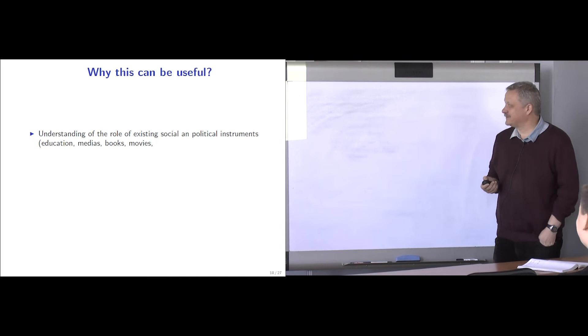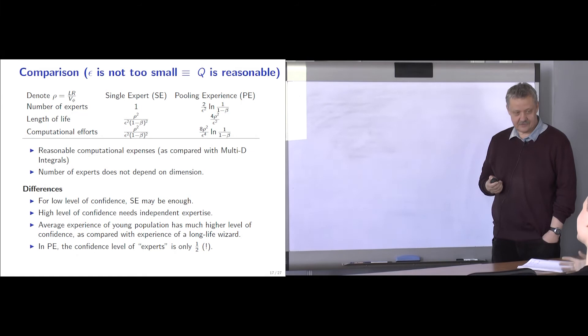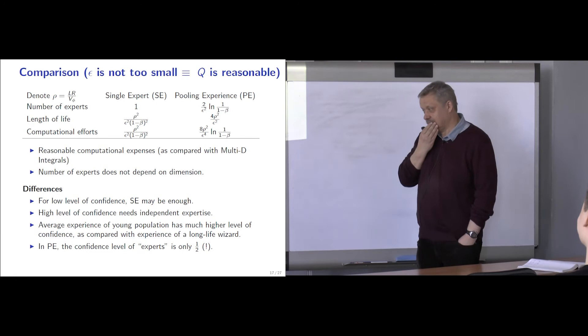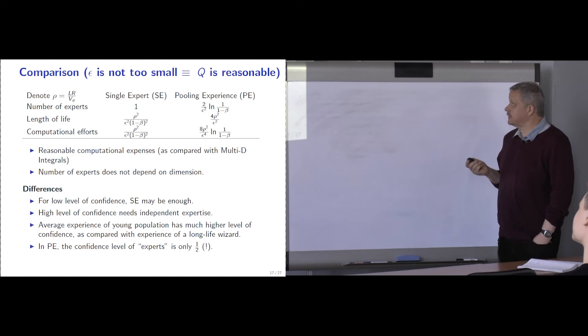A student asks: by this result, using pooling can dramatically improve dependence on the confidence level — can we do the same with accuracy, meaning use pooling to improve dependence on epsilon? The instructor responds: the main advantage of pooling is clear — you draw more and more implementations of the same random variable. Since it is the same random variable, the average is estimated better. With accuracy, the situation is different — after doing something in parallel, it's not obvious how it helps, so the answer is uncertain.